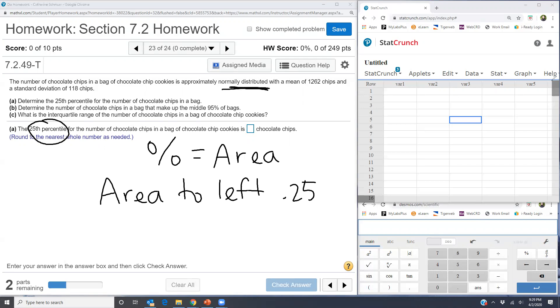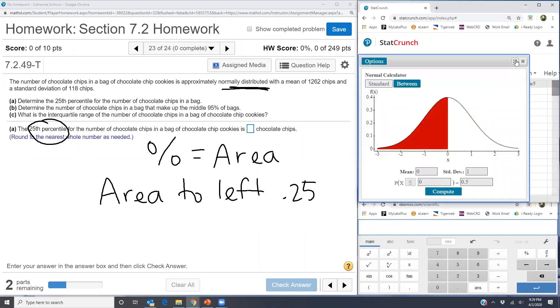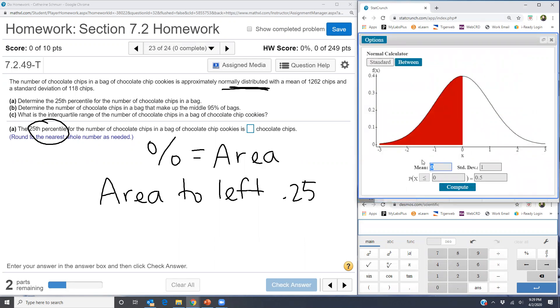So in StatCrunch, I'm going to go ahead and open my normal calculator. I'm going to go stat, calculators, normal. And I'll put in the mean that they give me 1262, standard deviation of 118. And I'm looking to the left, so I'm going to select less than or equal to.